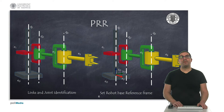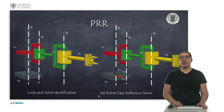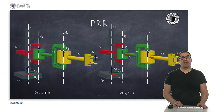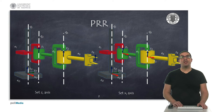In this second example we have a PRR robot with one prismatic and two revolute joints. The procedure is the same as before. We first identify the links and joints numbered from E0 to E3 and Q1 to Q3 respectively. Next, we set the position of the reference frame of the robot base, usually at the bottom, with Z0 pointing in the direction of joint 1. Then we set the position of the remaining Z axes, each on the axis of the next joint. Z3 points in the same direction as Z2. In this case, all joints are parallel, so the position of each remaining reference frame is totally arbitrary.